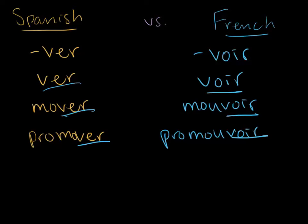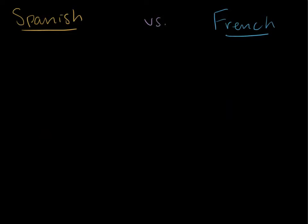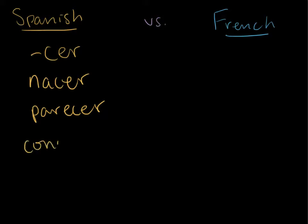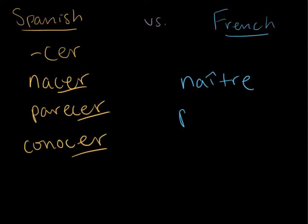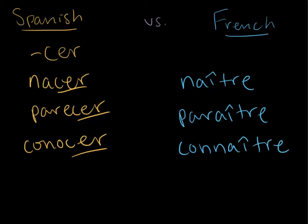Another similar correlation involves verbs that end in -cer in Spanish, like 'nacer' meaning to be born, 'parecer' meaning to appear or seem, and 'conocer' meaning to know or be familiar with. The French equivalents follow a pattern where -cer becomes -naître: 'nacer' becomes 'naître', 'parecer' becomes 'paraître', and 'conocer' becomes 'connaître'. So if you know 'conocer' is 'connaître', you can guess that 'nacer' becomes 'naître' by following the same pattern.